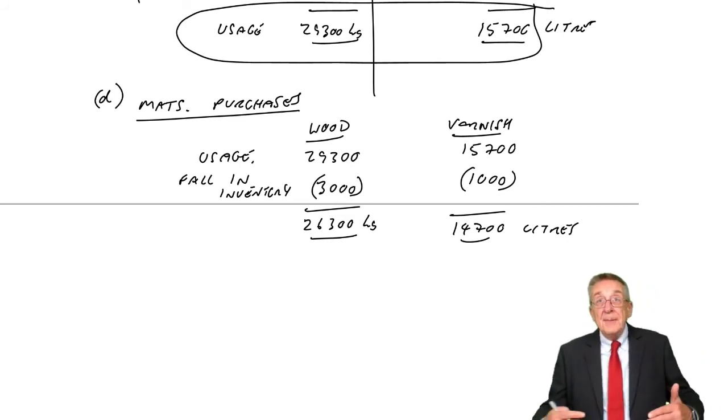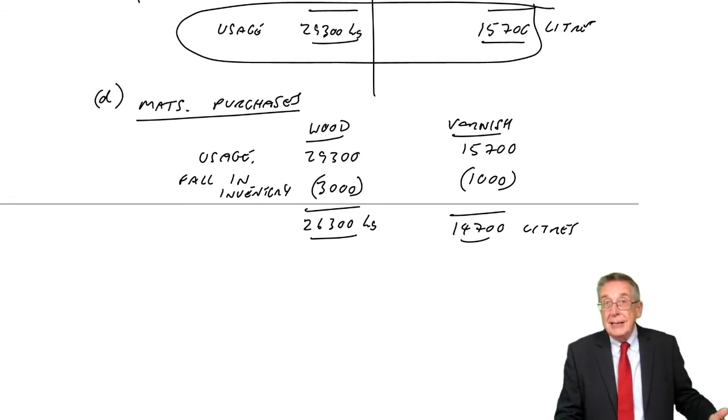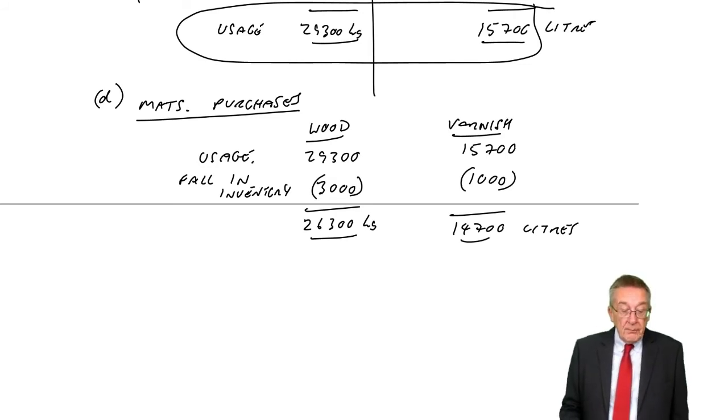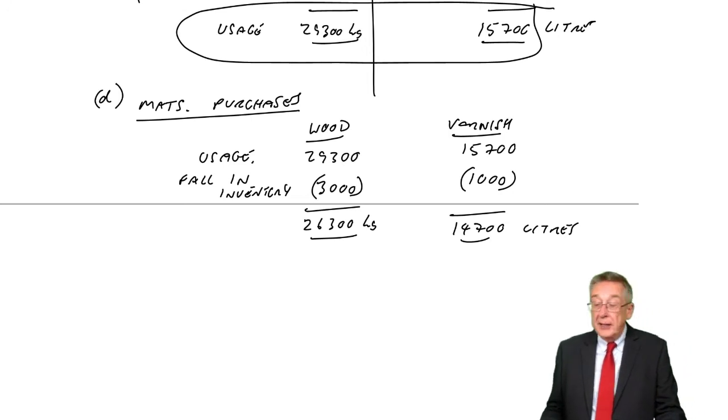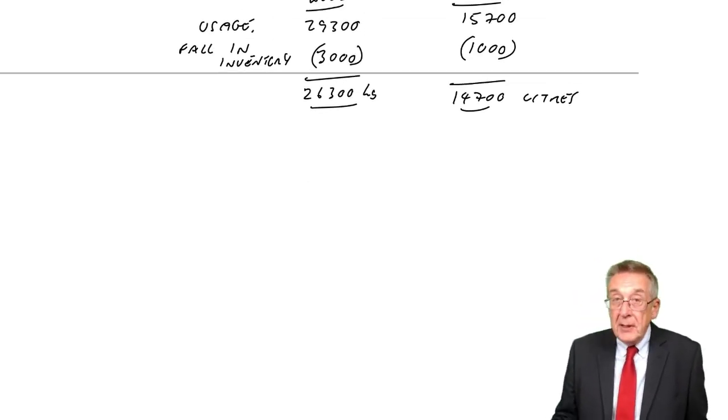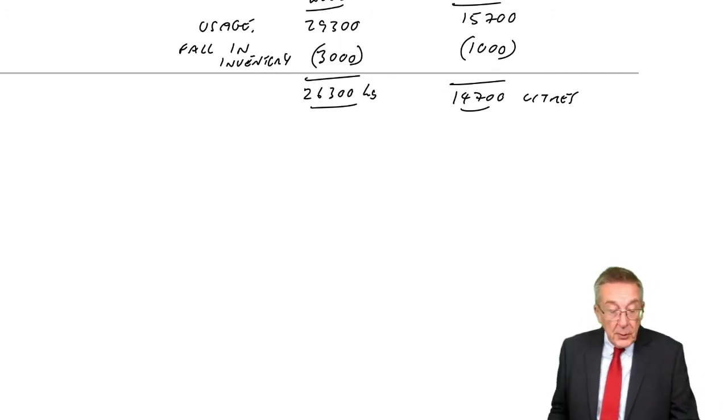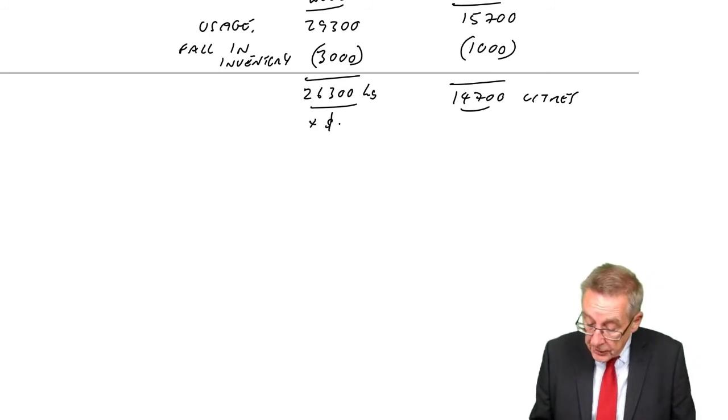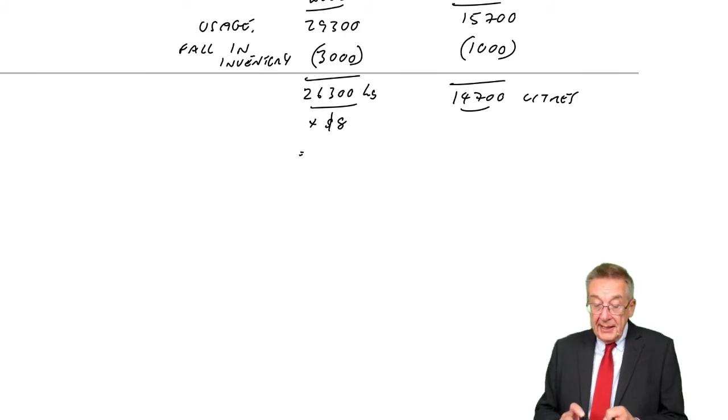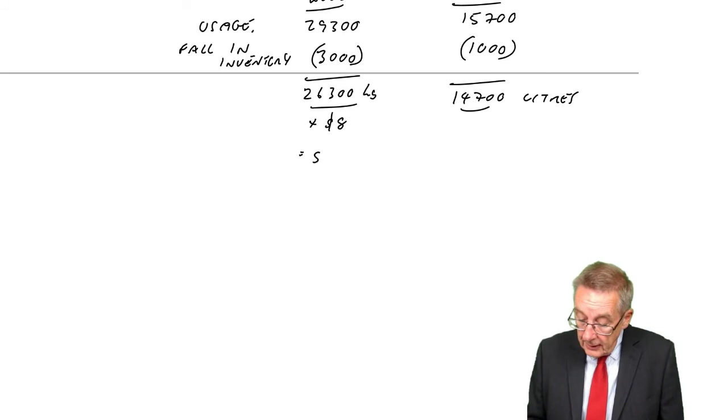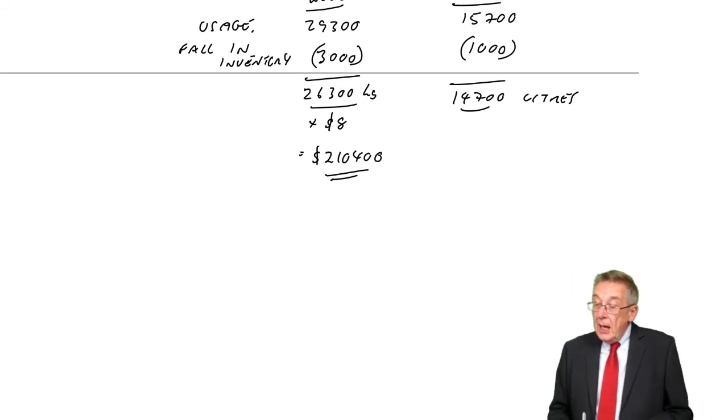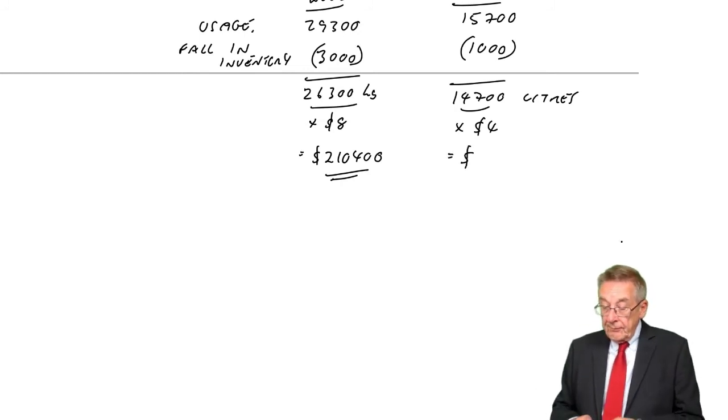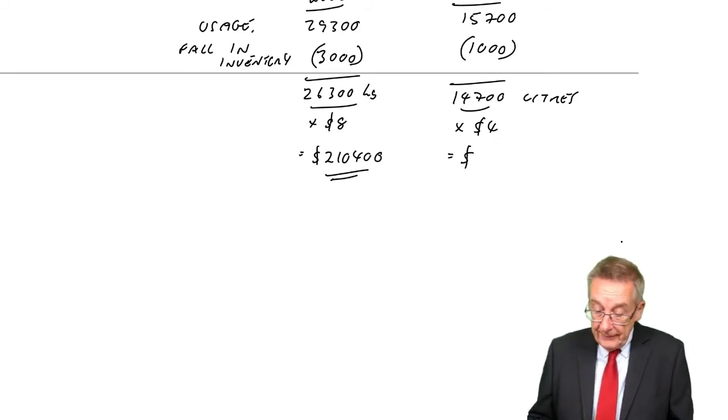That's what really matters to the purchases manager: how many do we need to buy of each? See how we have to go step by step. We have to budget on sales, then we can budget on production, then we can budget on usage. And once we know how many kilos and liters we need, then we can budget on what we need to buy. The question wants it in quantities and value. They need to budget how much wood to buy and how much they should be spending. Wood is $8 a kilo, so we're budgeting on spending 26,300 times 8 equals $210,400 on materials. Varnish is $4 a liter, so the budget spend is $58,800.